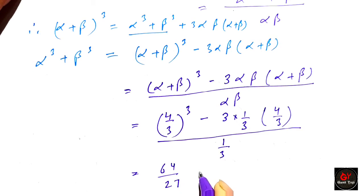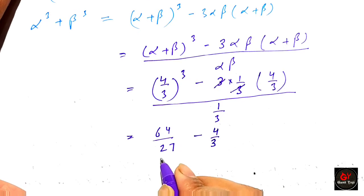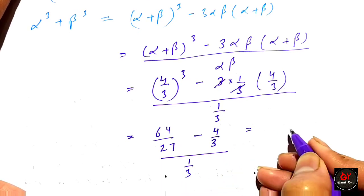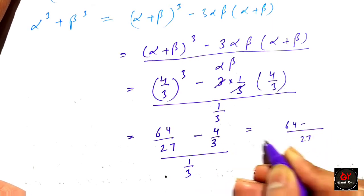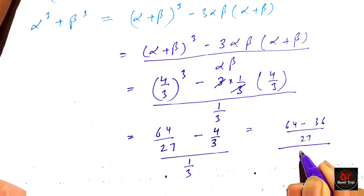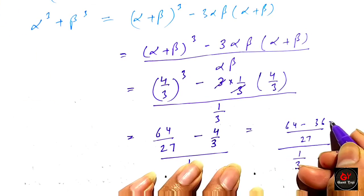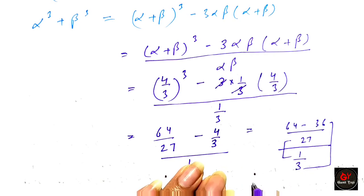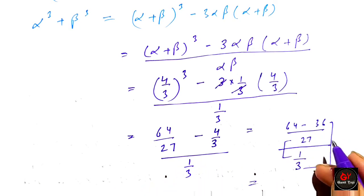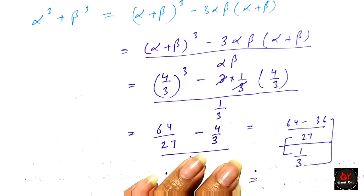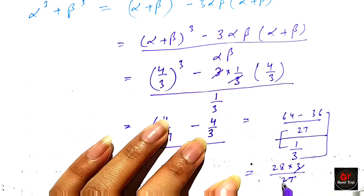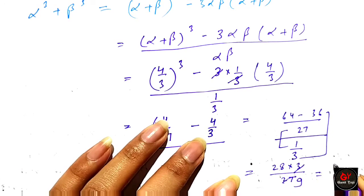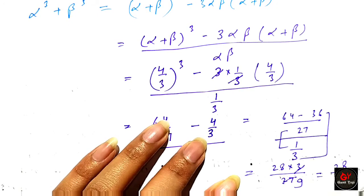This gives us 64 over 27 minus — taking LCM as 27 — 64 minus 36 over 27, divided by 1 over 3. Multiplying by 3 over 27 and simplifying, the sum of zeros equals 28 over 9.